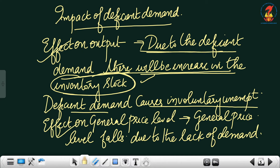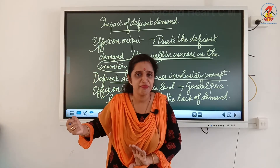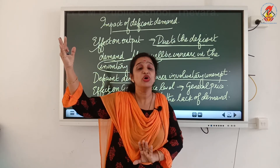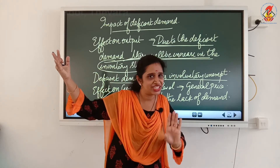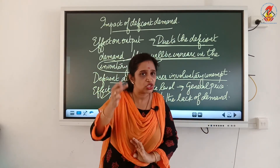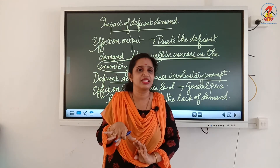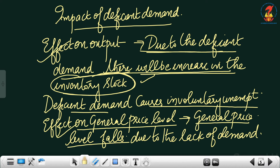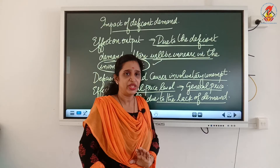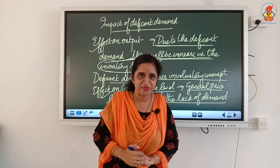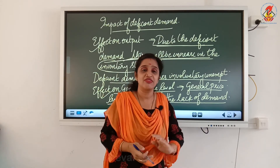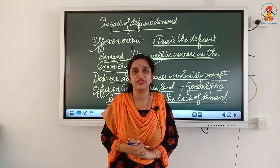The third impact is on the general price level. Normally, inflation means increase in money supply and rise in prices. Deflation means decrease in money supply and fall in prices. During deficient demand or deflationary gap, there is decrease in money supply and the general price level falls due to lack of demand. This is the opposite of what happens during excess demand, where increase in money supply causes inflation and rising prices.